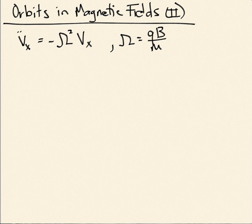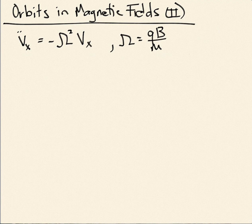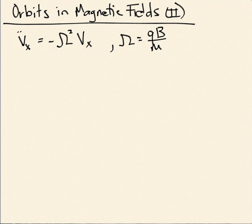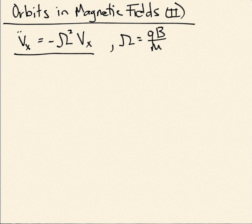All right, so let's pick it up where I left off in the last video. We were looking at the equation of motion for a charged particle moving in a uniform magnetic field, and we'd come up with this equation for the x component of the velocity.